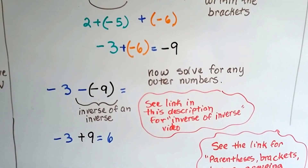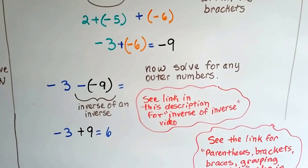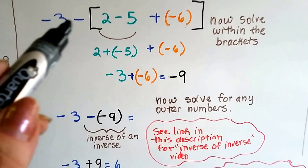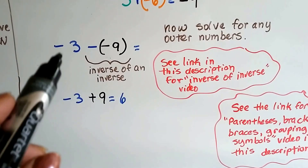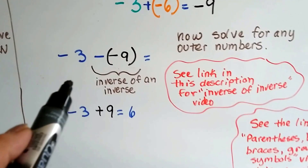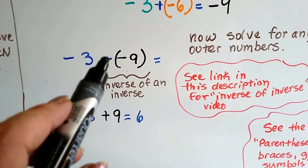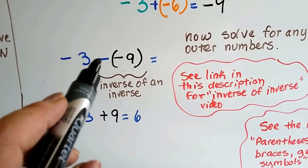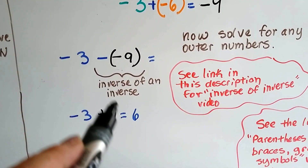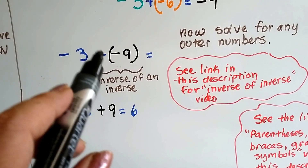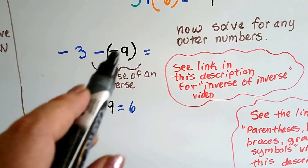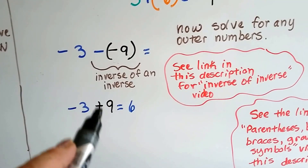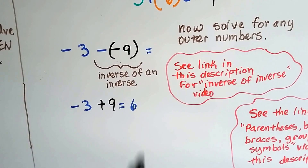That's just grouping — the associative property. Now we solve for the outer numbers: we drop down our negative 9 and we've got negative 3 minus negative 9. This is the inverse of 3 minus the inverse of 9. The inverse of an inverse would be a positive 9 — we've got two negative signs. So now we've got negative 3 plus 9, which brings us back up over 0 to positive 6.